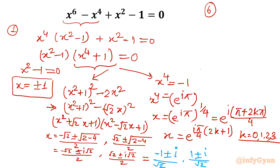So in total: we already calculated ±1 as 2 solutions, then -1 ± i/√2 gives 2 more solutions, and 1 ± i/√2 gives another 2 solutions — giving us 6 solutions in total.